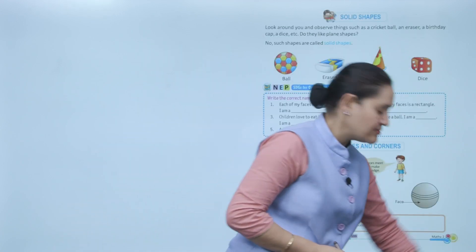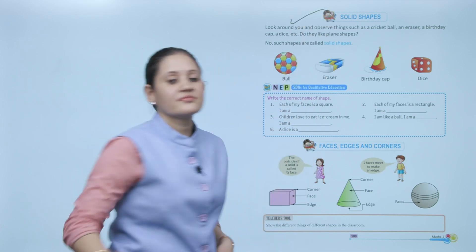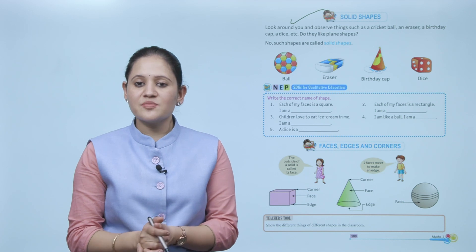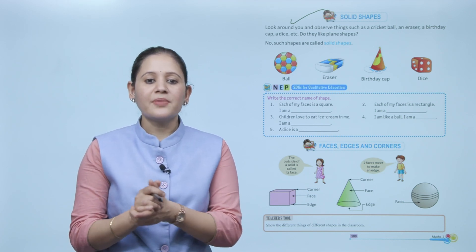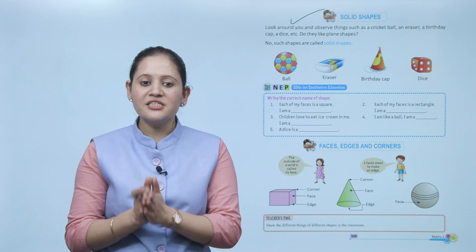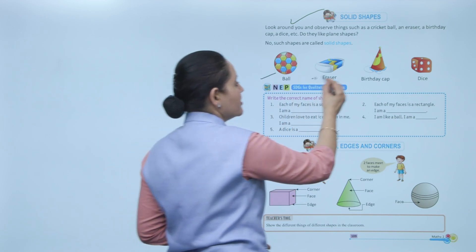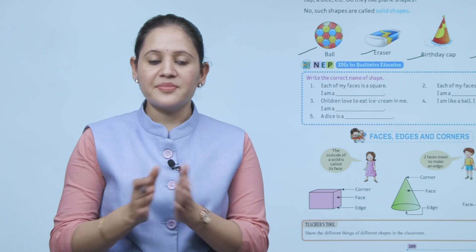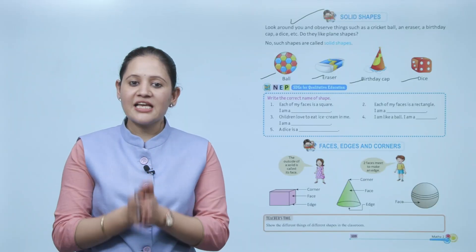Next is solid shapes. Look around you and observe things such as a cricket ball, an eraser, a birthday cap, and dice. Do they look like plane shapes? No. Such shapes are called solid shapes. A ball, eraser, birthday cap, and dice are all called solid shapes — they have three dimensions.